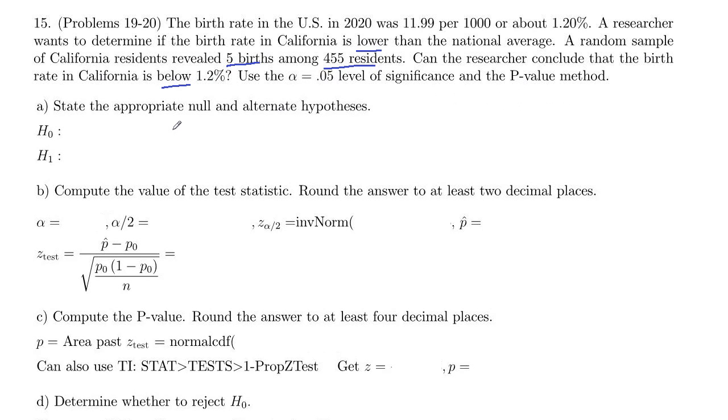Let's list our information here. We're going to test against the 1.2%, so that is going to be our p₀, which is 0.012 as a decimal. I took a random sample, and we had 5 births among 455 residents. So a birth is a success. That's x is 5, and 455 is our sample size, n.